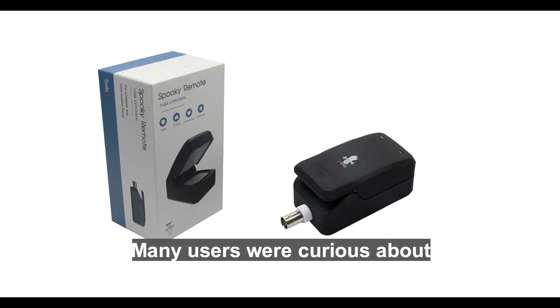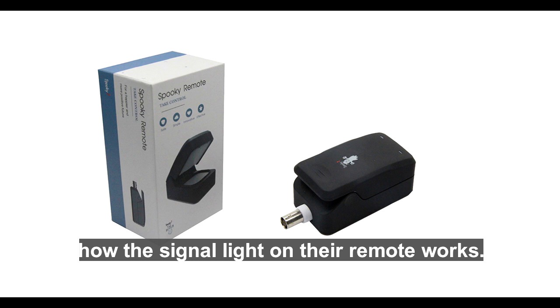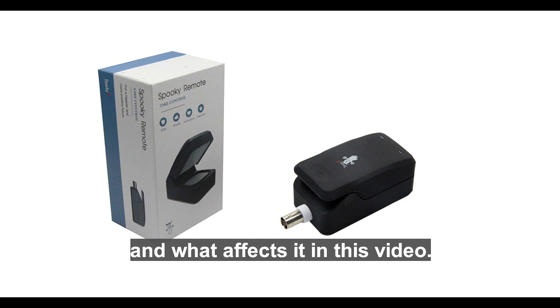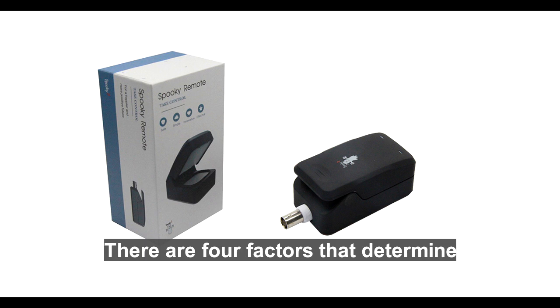Many users were curious about how the signal light on their remote works. Therefore, we will explain how the LED signal light works and what affects it in this video. There are four factors that determine how the LEDs respond to the signal, and they are frequency, waveform, offset, and amplitude.